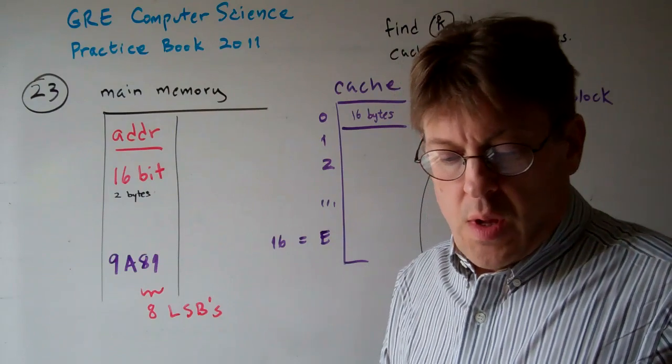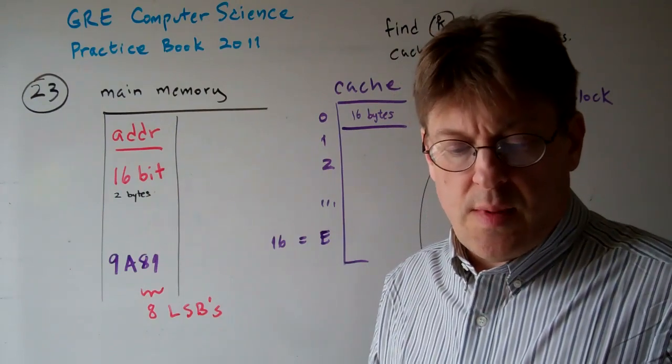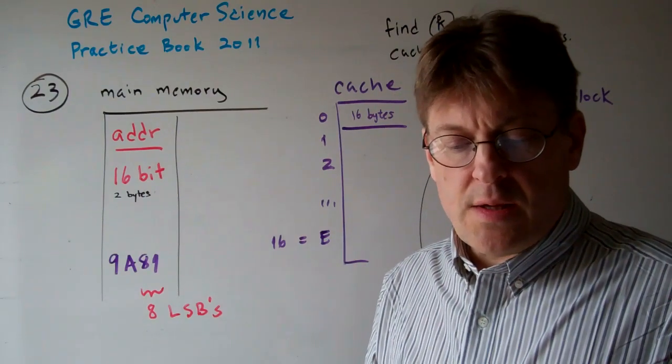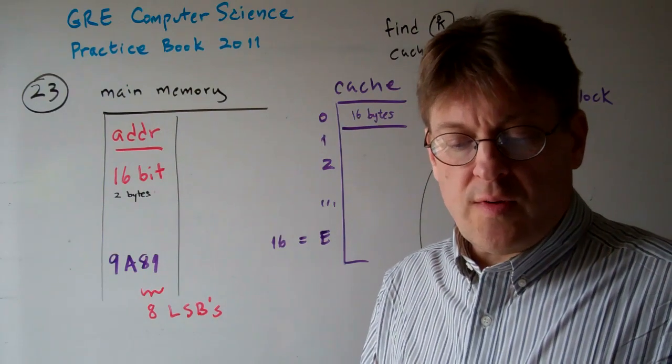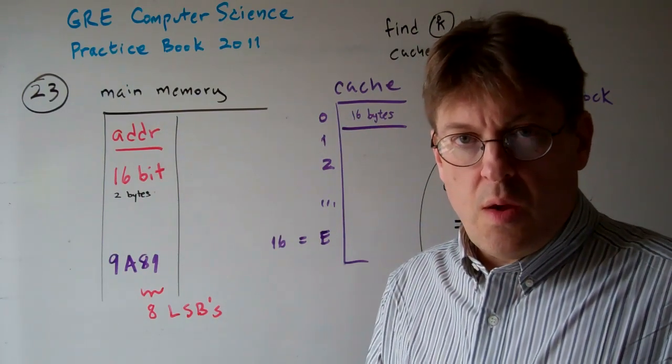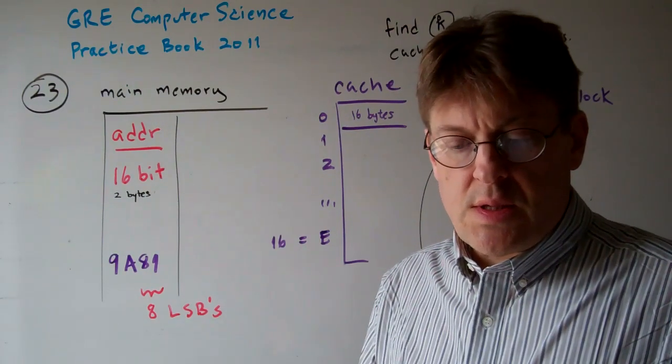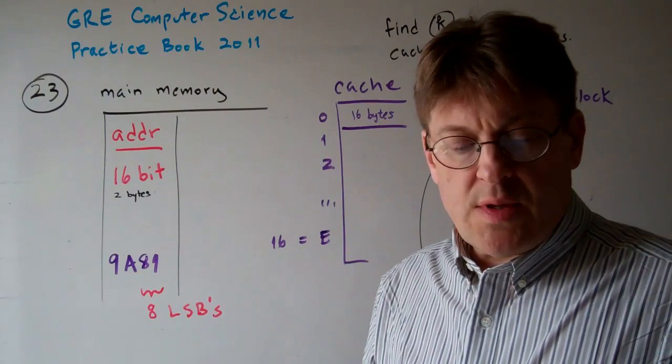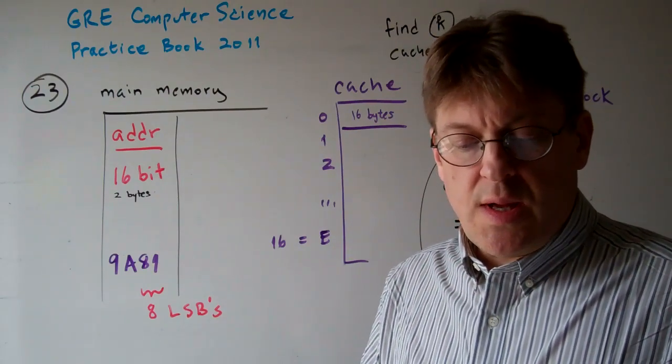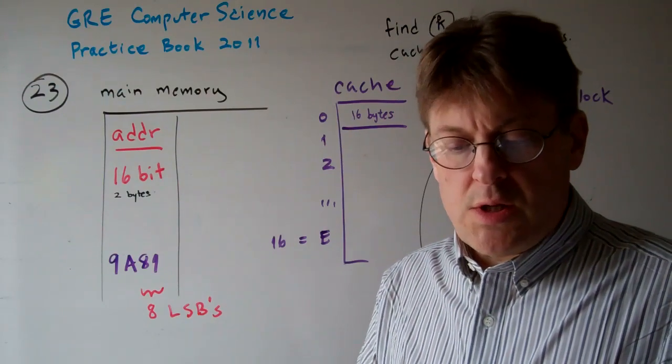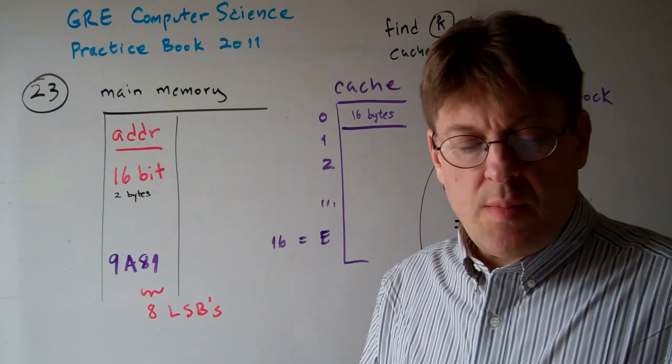Question 23. A computer memory system has a 64 kilobyte addressable main memory with 16-bit addresses. This same system has a one-level cache memory that can hold 16 blocks of data, where each block contains 16 bytes.